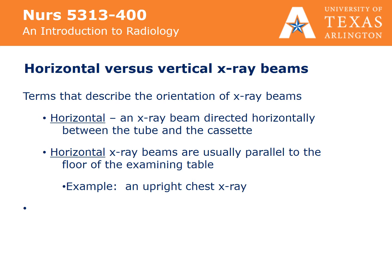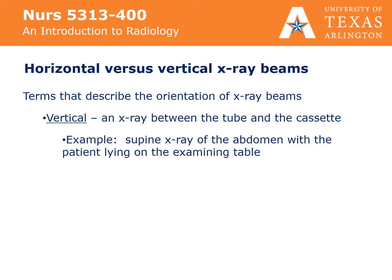Terms that describe the orientation of X-ray beams include horizontal, which is an X-ray beam directed horizontally between the tube and the cassette. Horizontal X-ray beams are usually parallel to the floor of the examining table; an example of this is an upright chest X-ray. Another term is vertical, which is an X-ray beam directed between the tube and the cassette. Examples include a supine X-ray of the abdomen with the patient lying on the examining table.